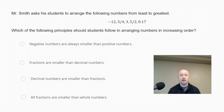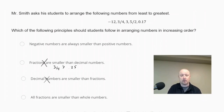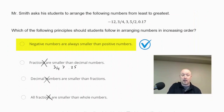There are three statements here that are not necessarily true. Fractions are smaller than decimal numbers is not necessarily true — for example, three-fourths is actually greater than 0.25, showing a counterexample where a fraction is greater than a decimal. Similarly, decimal numbers are smaller than fractions is false, and all fractions are smaller than whole numbers is not necessarily true. The only principle that is always true is that negative numbers are always smaller than positive numbers — that is the correct answer.